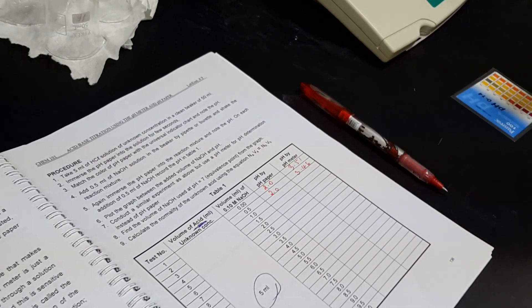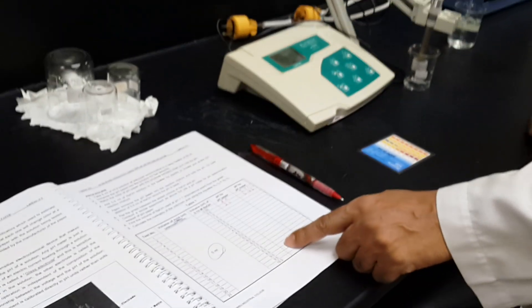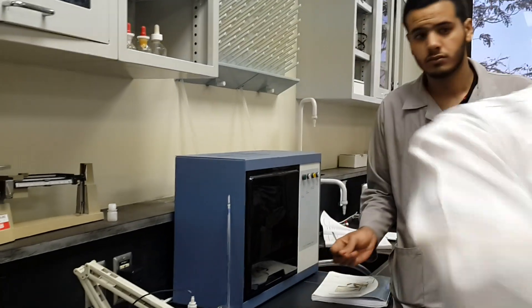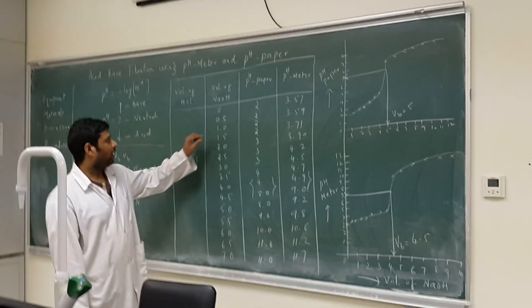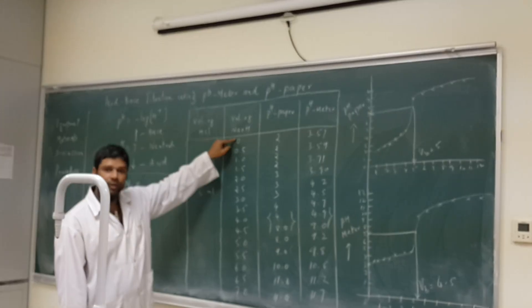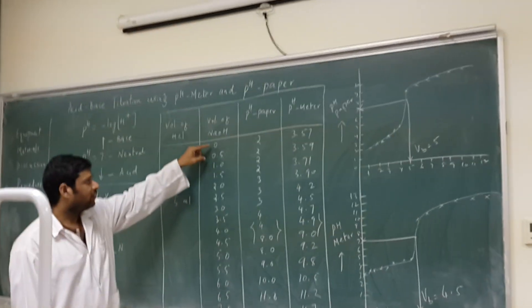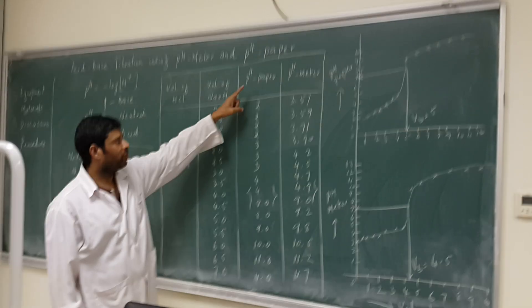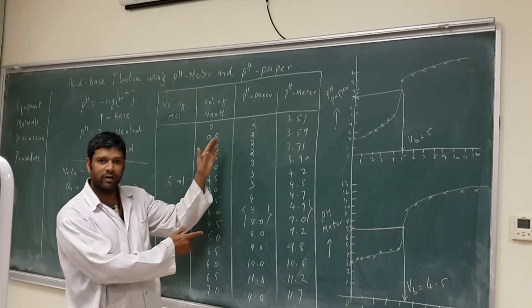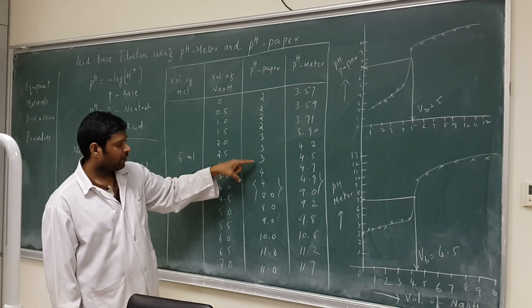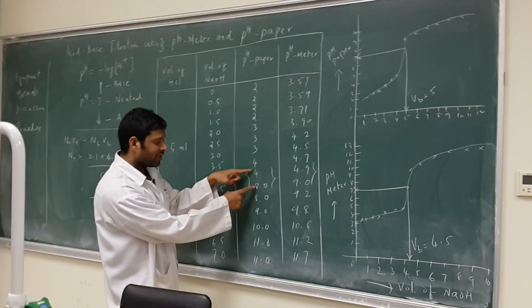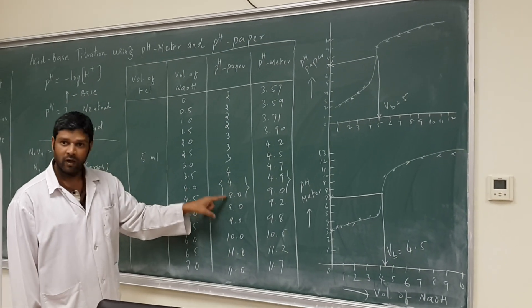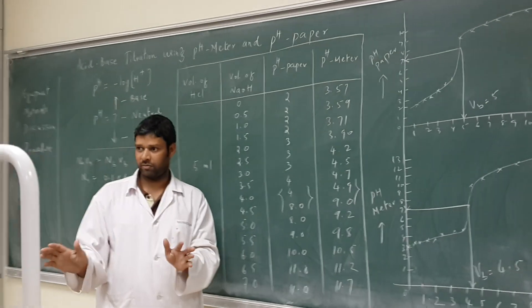Like this, you have to continuously add 0.5 ml of sodium hydroxide and take readings for pH paper as well as pH meter. As you add 0.5 ml of sodium hydroxide on addition, you will get readings continuously. Initially in the beginning, you will get 2 for pH paper: 2, 2, 2, 2, then 3, 3, 4, and suddenly you will get a jump. There is a huge difference in the reading. When you get this, then what you are doing is correct.